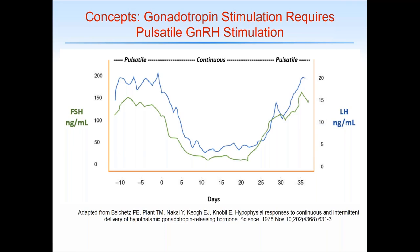This is also clinically very useful, as we use GnRH agonists in treating patients — the patients essentially see continuous GnRH, which somewhat paradoxically shuts down LH and FSH secretion and therefore ovarian function.